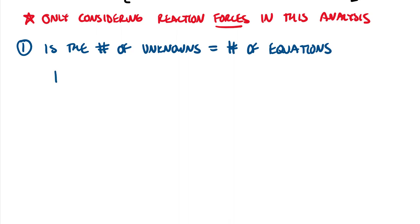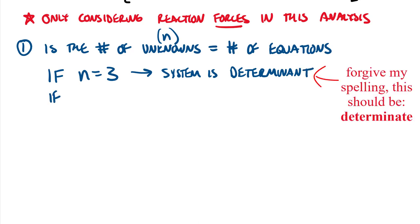And so we can put here that if, and the unknowns here, I'm going to write as n. So if n is equal to three, we can say that the system is determinant.